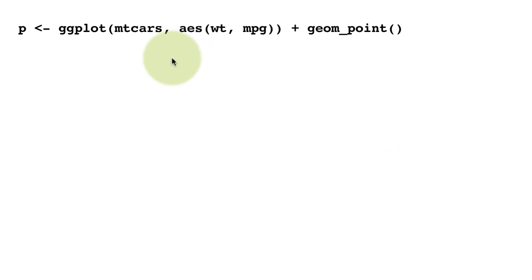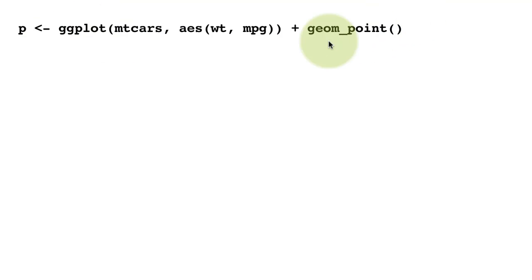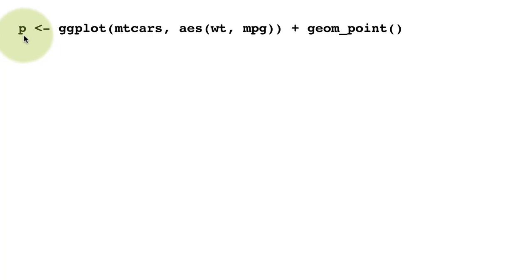Here we are using the mtcars data set. We've called ggplot with mtcars and mapped the x-axis to weight and the y-axis to miles per gallon, which is fuel efficiency, and created a scatter plot with geom_point. Because we are assigning it to a variable, the plot will actually not be drawn.